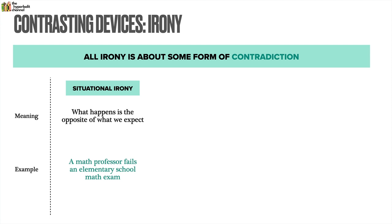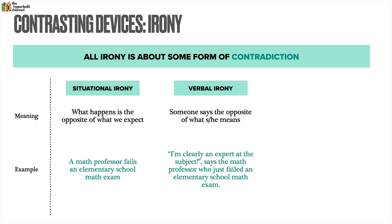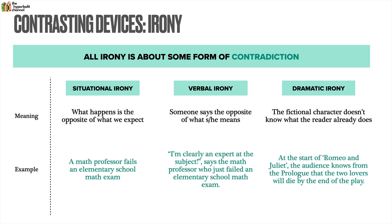Verbal irony is perhaps something we're more familiar with — it's really just sarcasm, when someone says the opposite of what he or she means. For example, if the math professor were to say 'I'm clearly an expert on the subject' after failing an elementary school exam, that's him being sarcastic. And finally, dramatic irony is more specific to literature — it's when a fictional character doesn't know what the reader or audience already does. A famous example is at the start of Romeo and Juliet, when the prologue reveals that the two lovers will die, but in act one they fall in love, clearly not anticipating their fate.